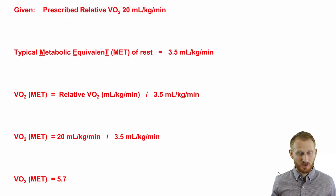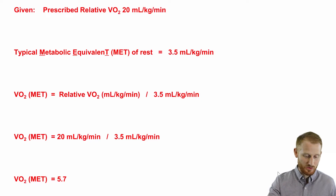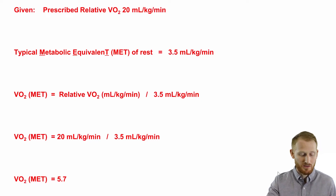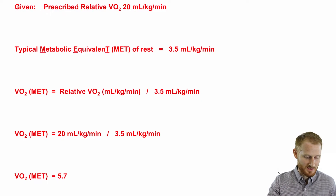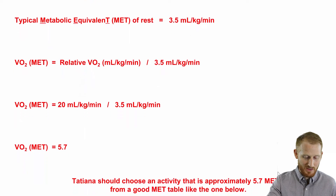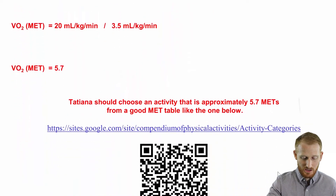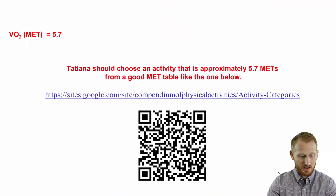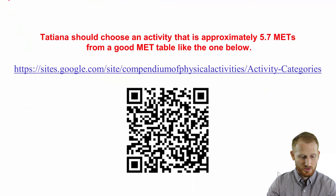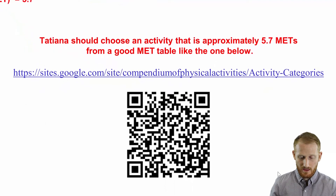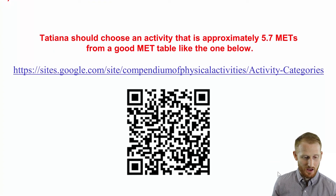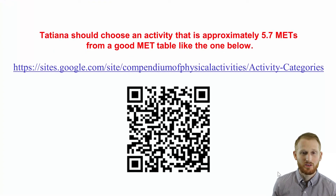We end up with 5.7 METs. So it's really just that simple — just dividing by 3.5 will give you your METs. And then what you can do is go to a place that has MET tables, like I mentioned before.